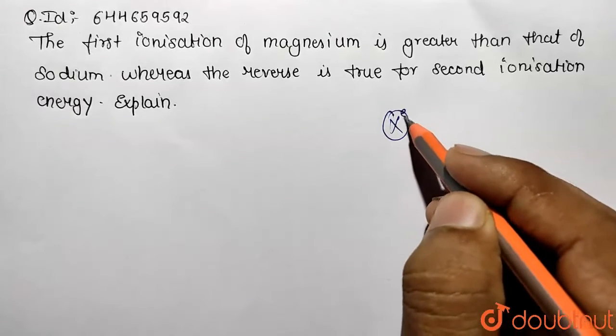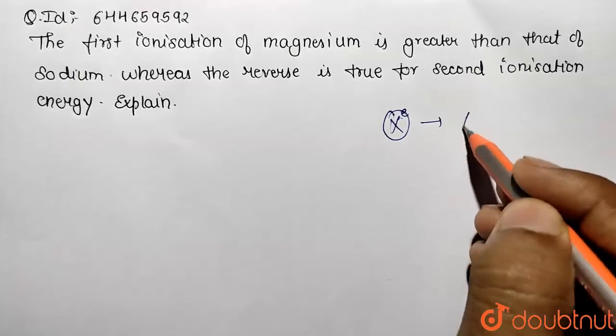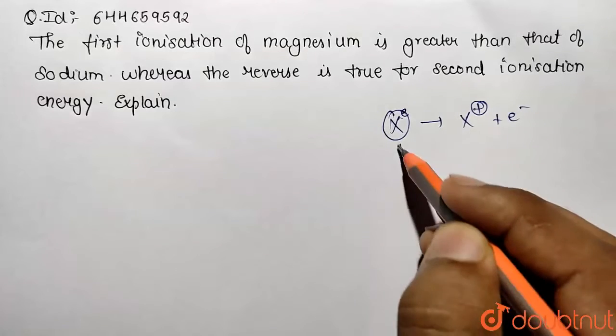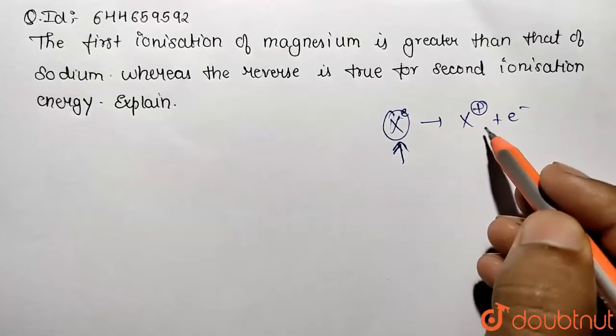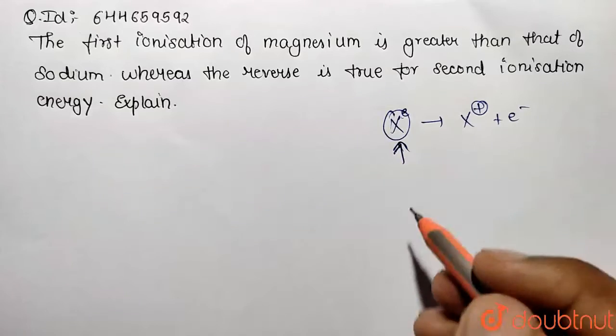So this electron from valence shell is being removed and correspondingly cation will be formed. So the energy that needs to be supplied to do this process is known as ionization energy.